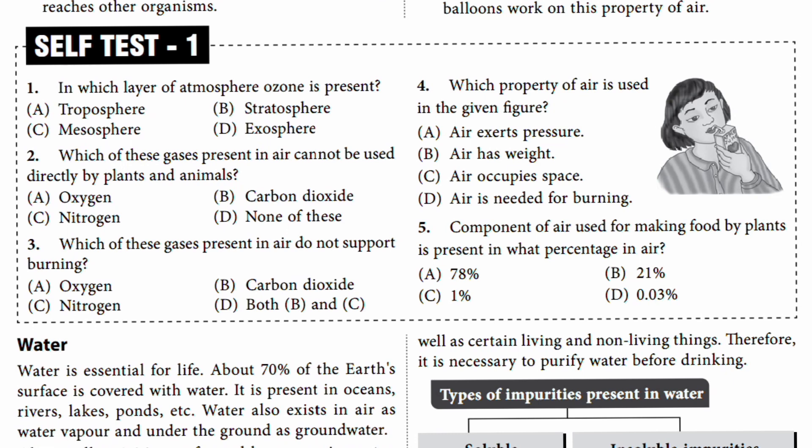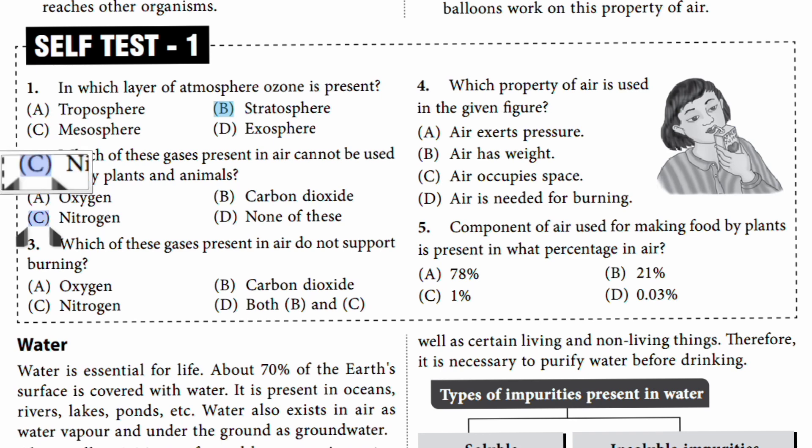Now we have a self-test. Question one: In which layer of the atmosphere is ozone present? The answer is the stratosphere. Question two: Which gas is present in the air that cannot be used directly by plants and animals? The answer is nitrogen — because special bacteria are needed to convert it into a usable form for plants, and animals are dependent on plants.